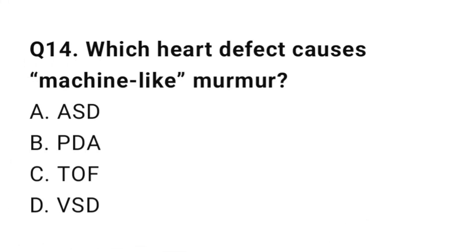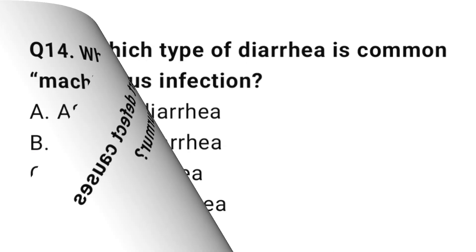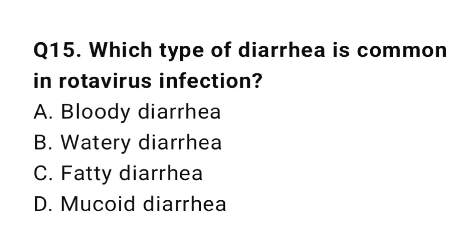Question 14: Which heart defect causes a machine-like murmur? The right answer is B: PDA. Question 15: Which type of diarrhea is common in rotavirus infection? The right answer is B: watery diarrhea.